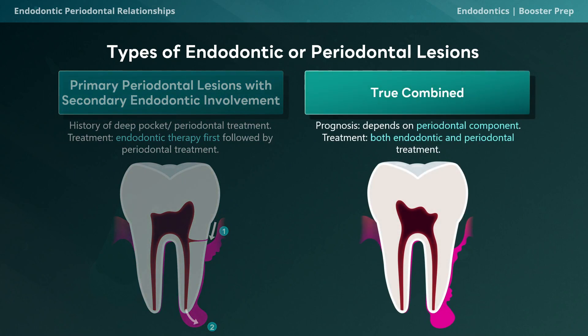Last but not least, the true combined endoperiodonal lesion describes a situation where the two processes began independent of each other and coalesced, becoming clinically indistinguishable — you really can't tell what came first, like the chicken or the egg, but with teeth. Treatment requires addressing both perio and endo simultaneously for optimal healing. The prognosis depends on how much destruction was caused by the periodontal component, and teeth with long-standing periodontitis may have had so much clinical attachment loss that the prognosis becomes nearly hopeless.